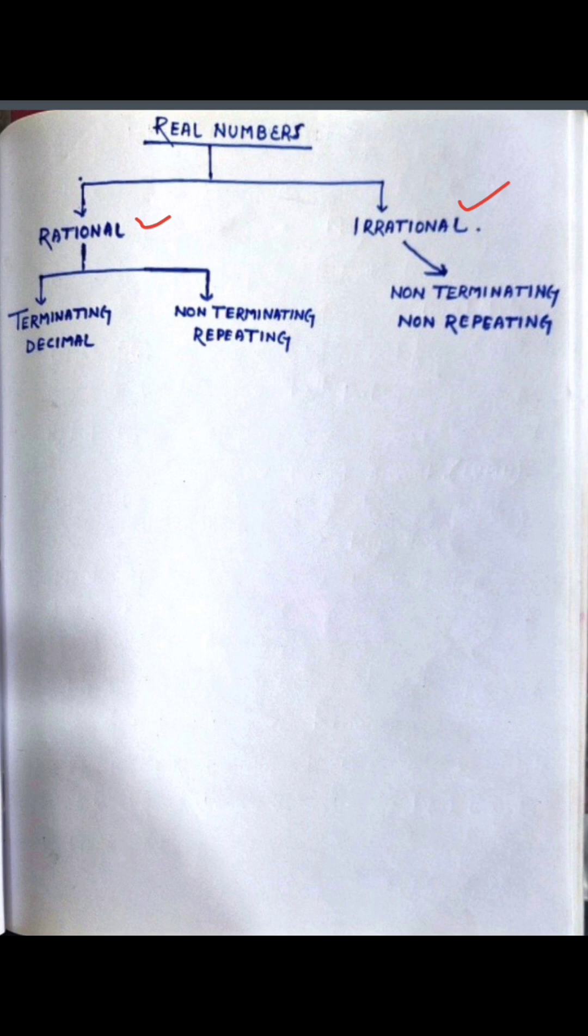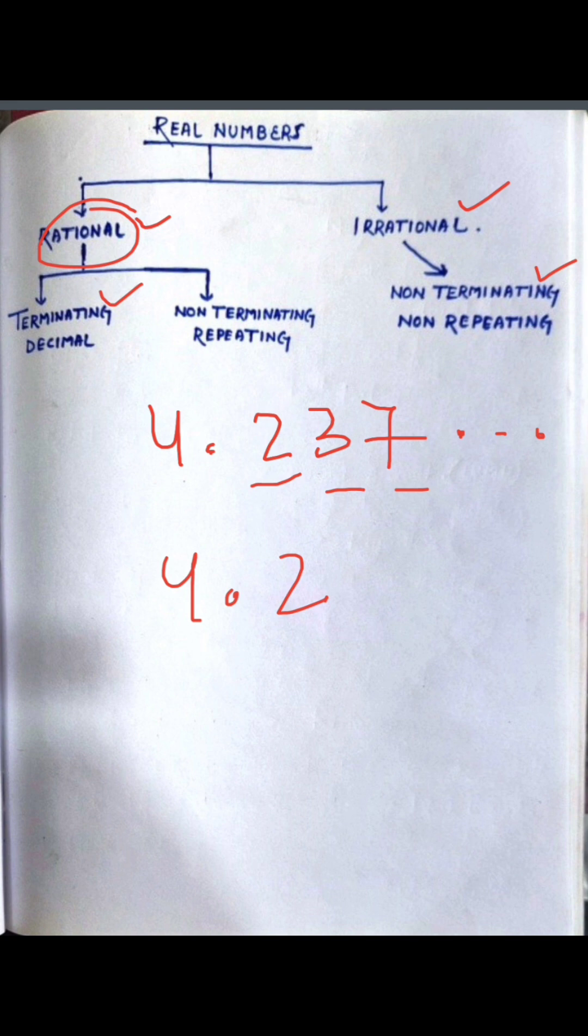But if I say 4.237 dot dot dot, this decimal is non-terminating, non-repeating. This is irrational.